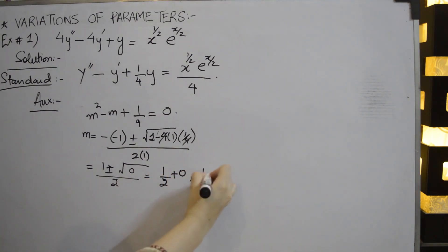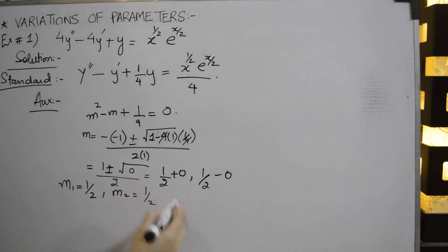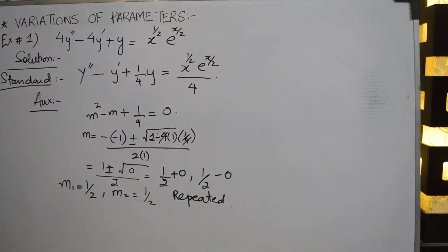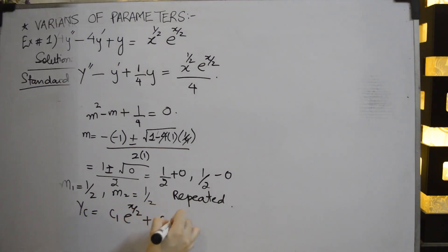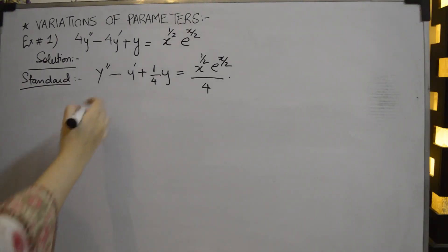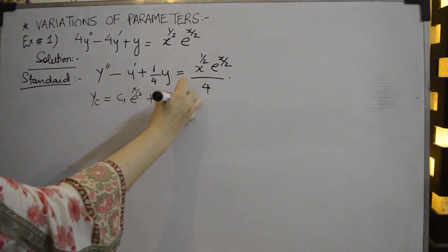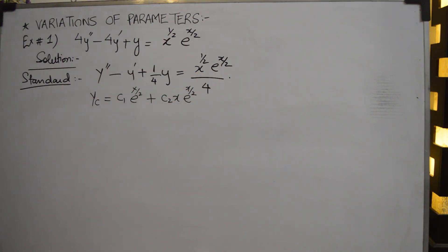The roots are m = 1/2 and m = 1/2, so these are repeated real roots. The complementary solution is yc = c1*e^(x/2) + c2*x*e^(x/2).